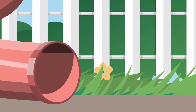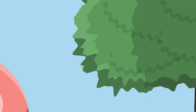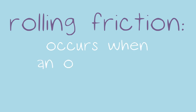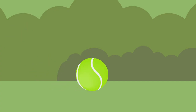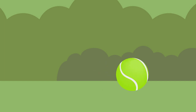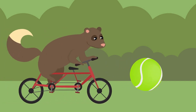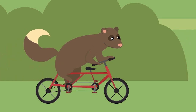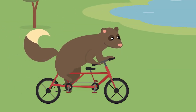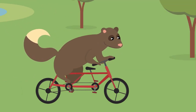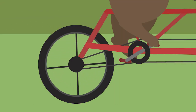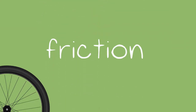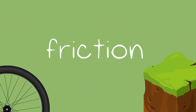The second type of friction is rolling friction, which occurs when an object rolls across a surface. The opening example of a ball rolling on the ground is an example of rolling friction. A bicycle is another great example — if you stop pedaling and just coast, your bicycle's wheels will eventually roll to a stop. Without more pedaling, the friction of the wheels against the ground will stop the bicycle's motion.